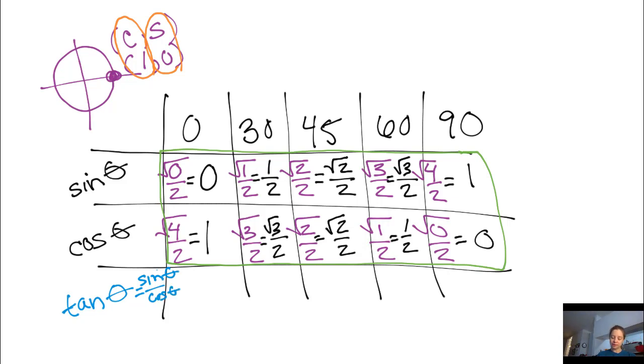For example, the tangent of 0 degrees. Well, I take the sine of 0 degrees, 0, and I divide that by the cosine of 0 degrees, which is 1. And I get a value of 0. Let me do one more with square roots.